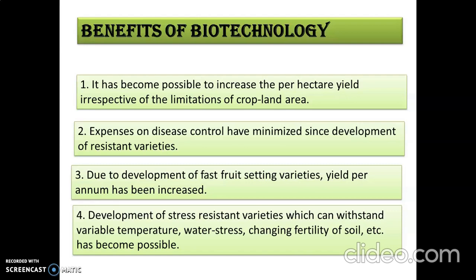Development of stress-resistant varieties which can withstand variable temperature, water stress, and changing fertility of the soil has become possible through biotechnology. The atmospheric conditions are never predictable, so we need to improve crops that will withstand all environmental problems. Sometimes a crop is ready and there is too much rain or drought, causing big losses for farmers. Biotechnology helps minimize such losses, though it cannot completely avoid them.